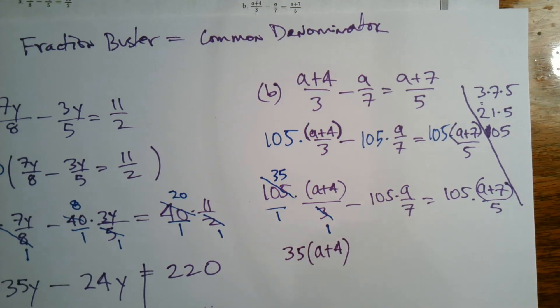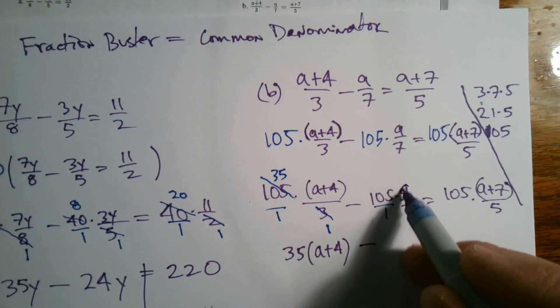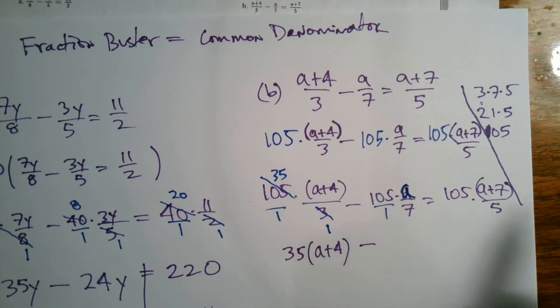I got to figure out okay, 3 goes into 3 once, how many times does 3 go into 105? 3 goes into 105 35 times. So this now becomes 35 times a plus 4 - keep the parentheses because remember whatever you ended up here as your coefficient needs to be distributed - minus, and then here we got another one: 105 over 1 times a. And that's, by the way, that's an a over 7.